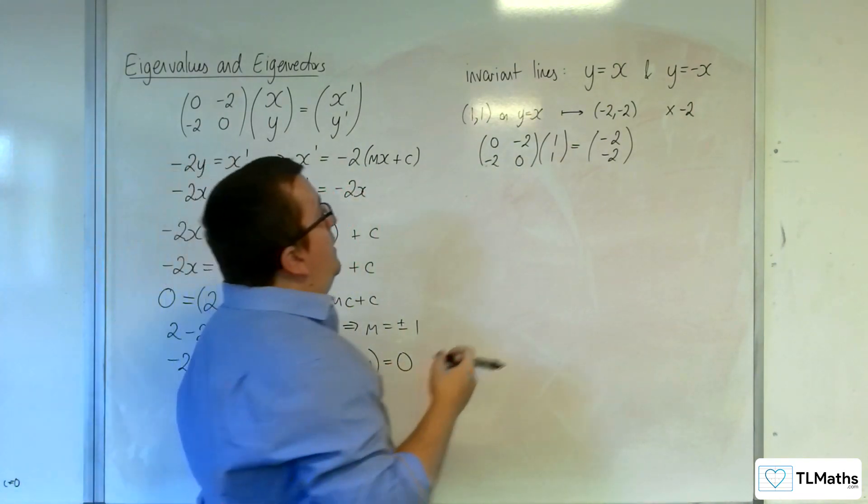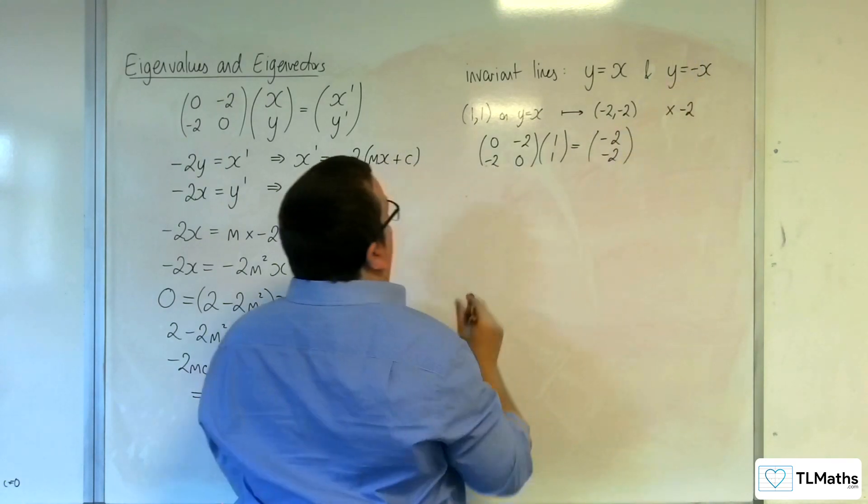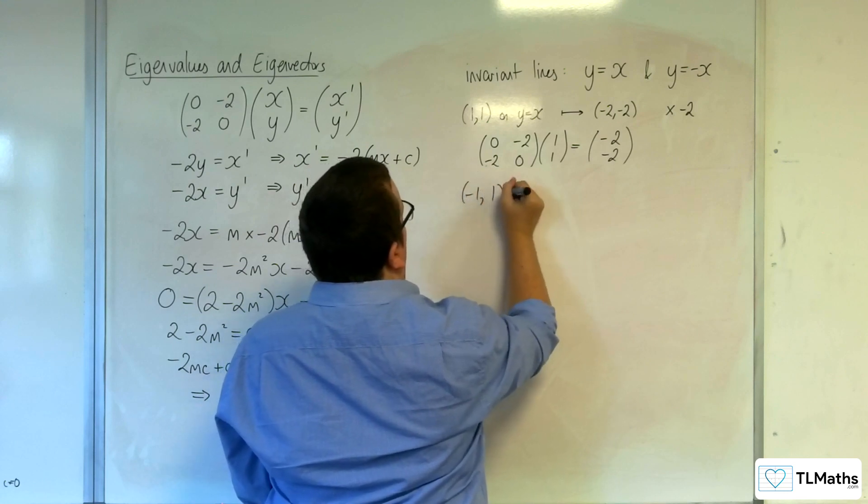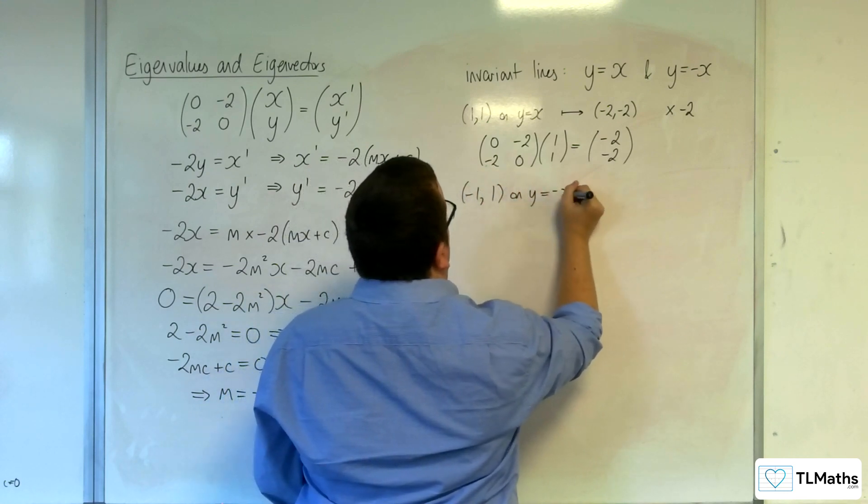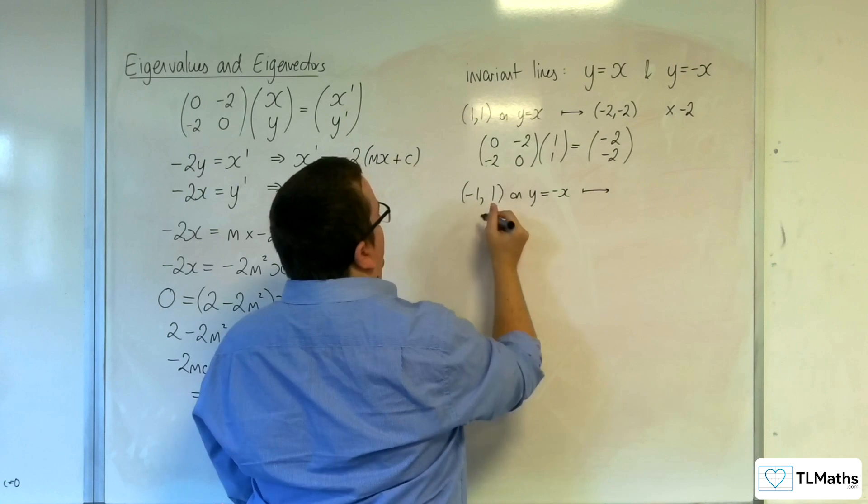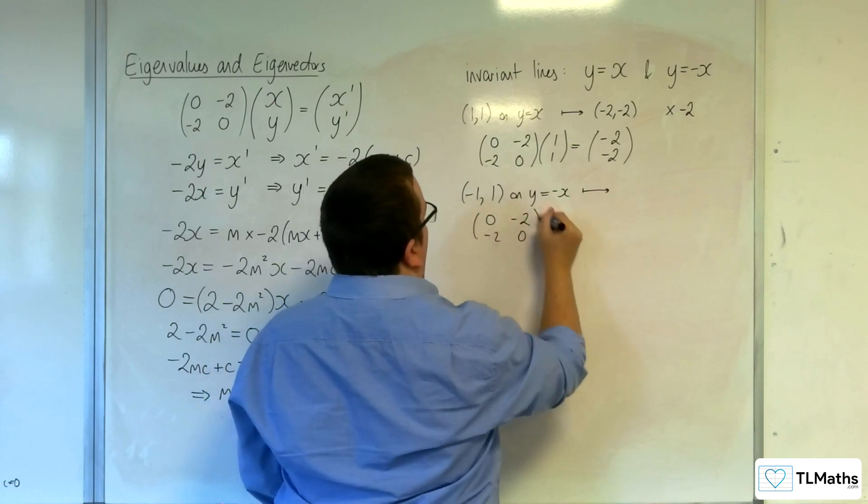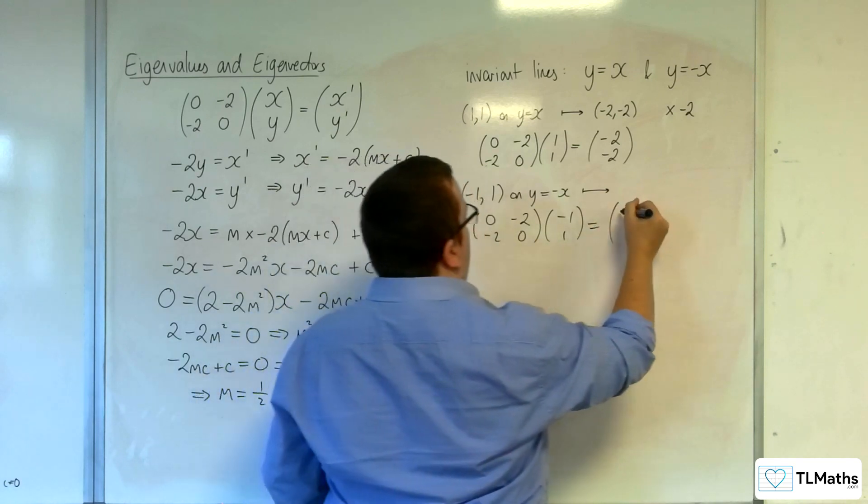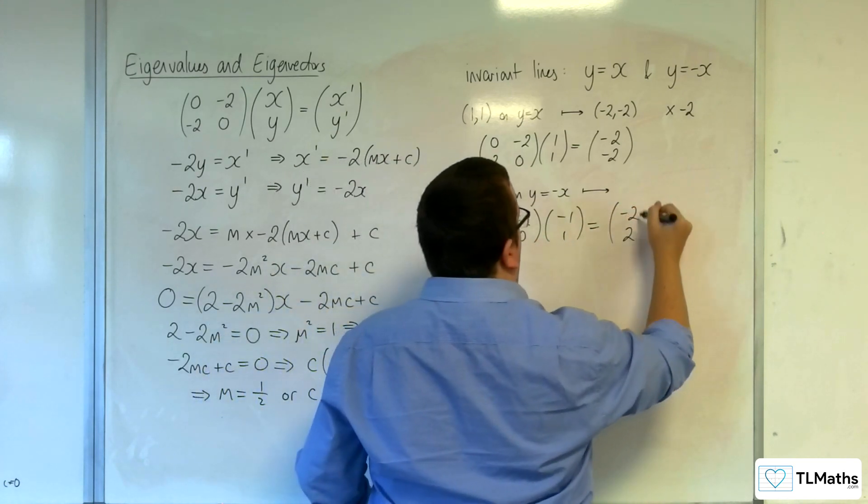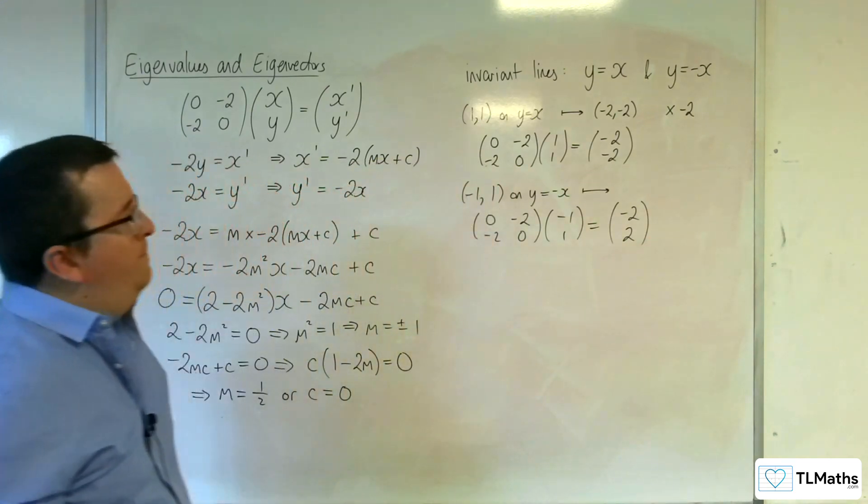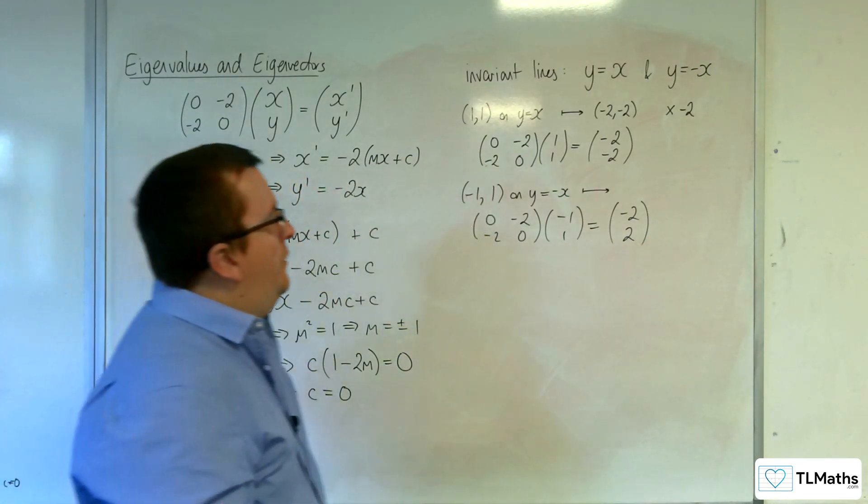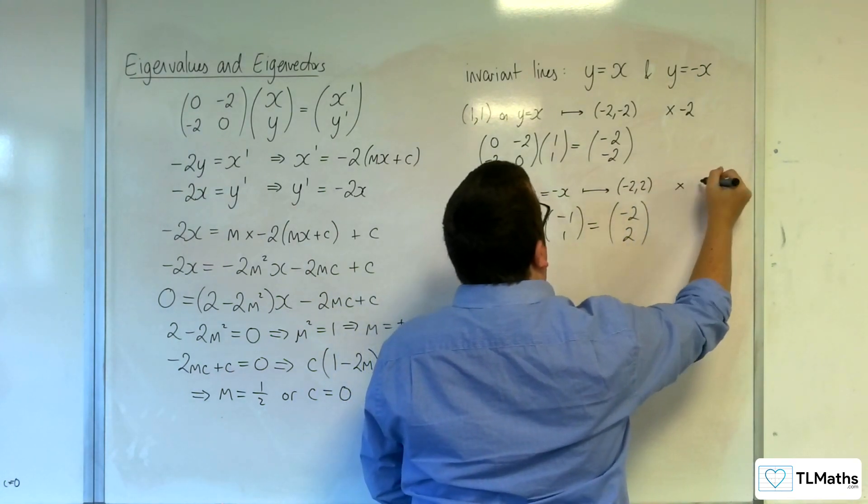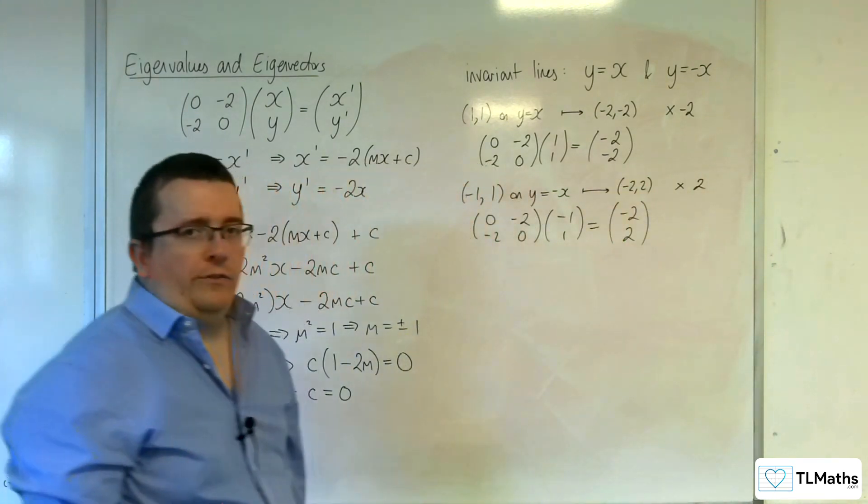And if we look at a point on y equals minus x, so let's put minus 1, 1. So minus 1, 1 on y equals minus x. Let's see what happens to that one. So we're going to get minus 2 and 2. So what's happening with this one? Well, minus 1, 1 is going to minus 2, 2. So what's happening is the coordinate is getting multiplied by 2.